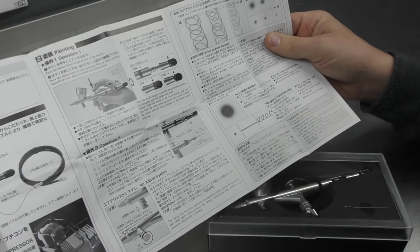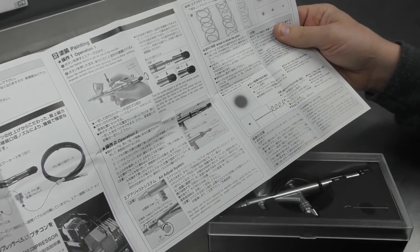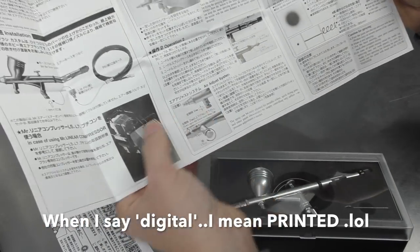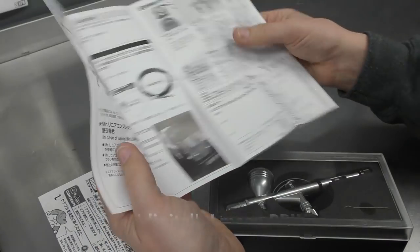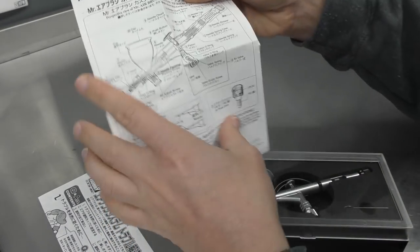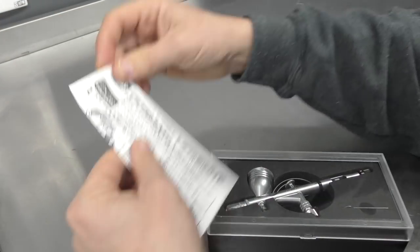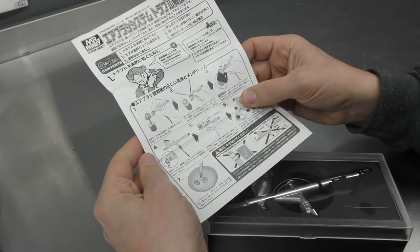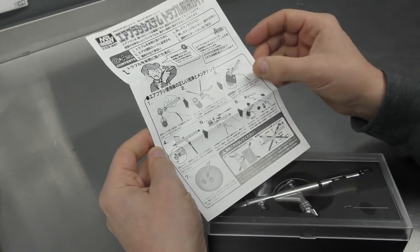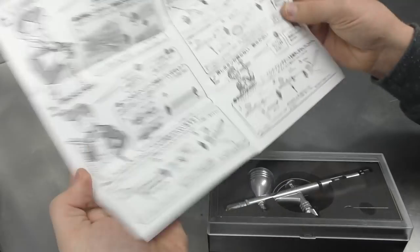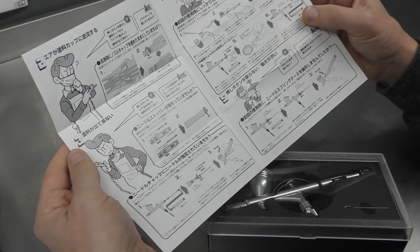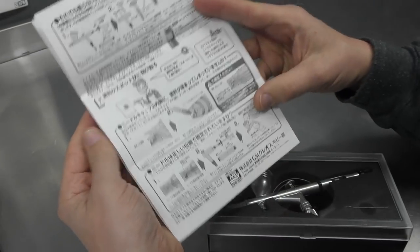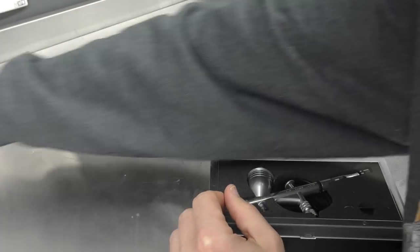Just got a bit of an exploded diagram there. So again this model is the PS770. Some little test patterns that are just digital, so not hand-done on this one. This one also comes with a MAC valve. Just plenty of information there. This is just a basic how-to: how to clean, how to pull it apart, that sort of thing. Be handy if I could read Japanese but you get the idea.